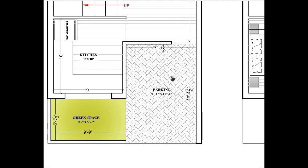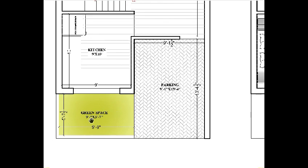Parking size is 9 feet 1 by 13 feet 4. That means horizontally here to here is 9 feet 1, and vertically here to here is 13 feet 4. After this parking, here is the adjoining green space — that is 9 feet 9 by 5 feet 7.